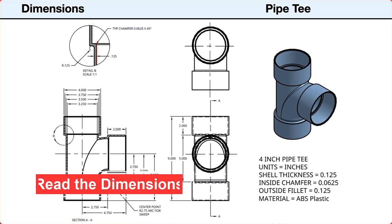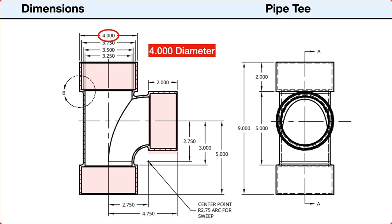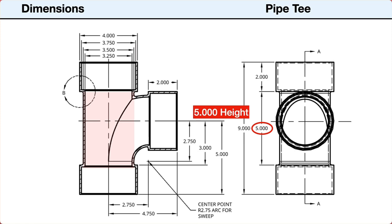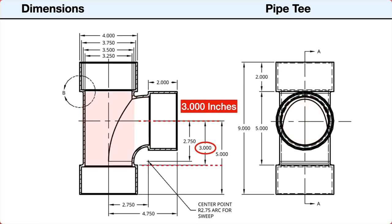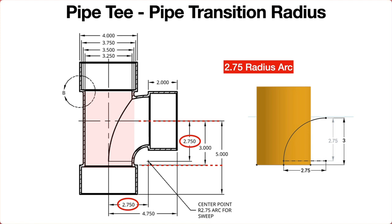Next, we'll look at the dimensions and notes. First, the dimensions are in decimal inches. The flanges have an outside diameter of 4 inches and an inside diameter of 3.75 inches. This results in a wall thickness of 1/8th or 0.125 inches. The pipe has a height of 5 inches between the outer flanges. The transition pipe also has an outside diameter of 3.5 inches and a wall thickness of 1/8th inch or 0.125 inches. The center of the transition pipe is 3 inches above the flange edge.